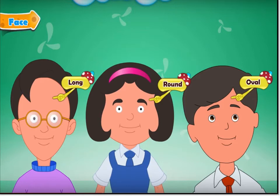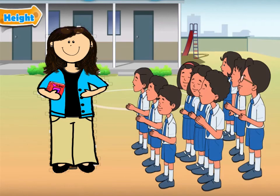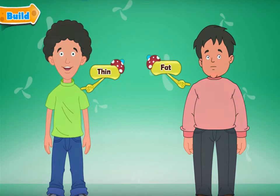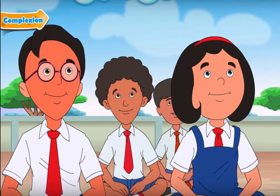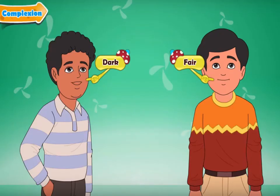We all have different heights. Some of us might be short, some of us might be tall, or some of us might be medium. Everyone has a different build — some of us might be fat, while some of us might be thin. Everyone around us has different complexions. Some might be fair, while some might be dark.